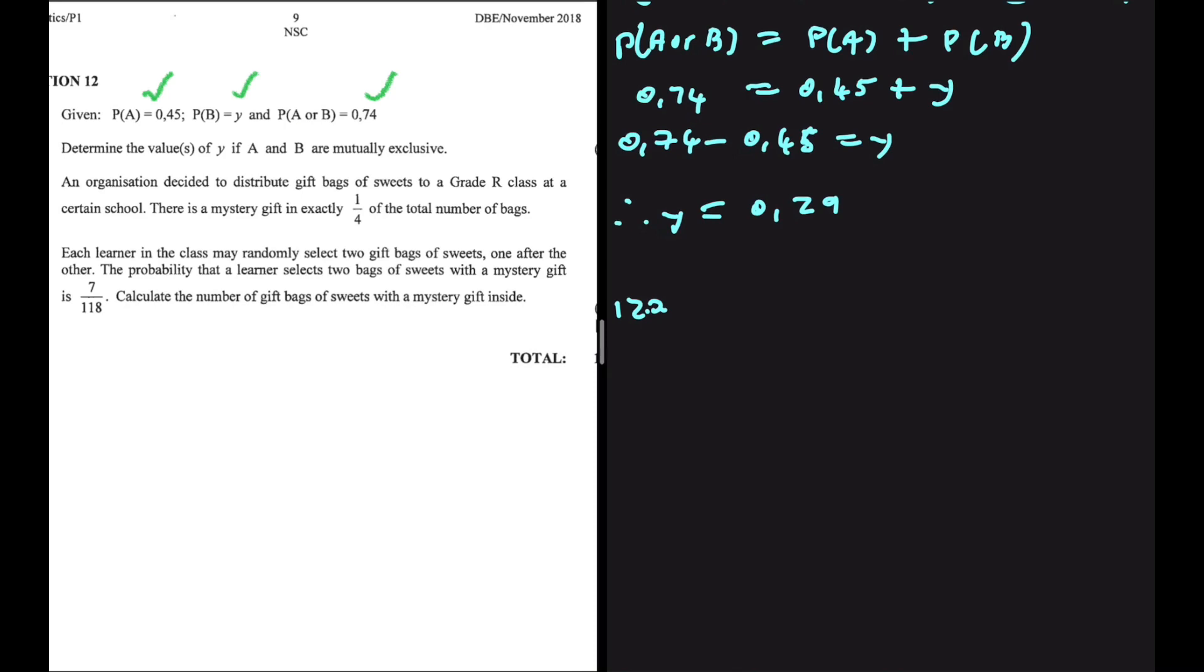So when it comes to selections, it is always better to go with a tree diagram. Let's make sense of our situation first. If you have a total of four bags, you're going to have one mystery gift and you're going to have three sweets. This is our simplified ratio.